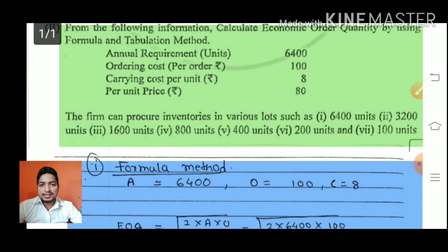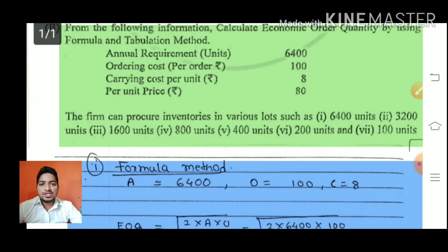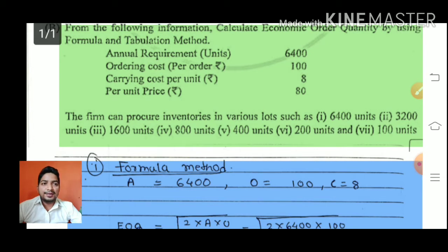We will say A is annual consumption, annual requirement: 6,400 units. The second value, O, ordering cost is Rs. 100, carrying cost is Rs. 8.